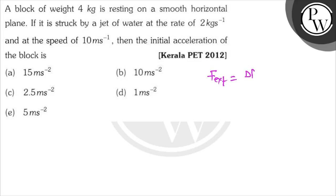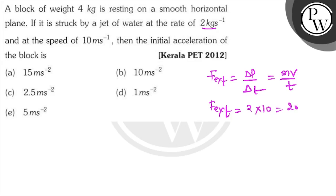The force equals delta p by delta t, which is the change in momentum: mv by t. So F external equals m by t times v, that is 2 kilogram per second multiplied by 10 meter per second, which gives 20 Newton. The force is 20 Newton.